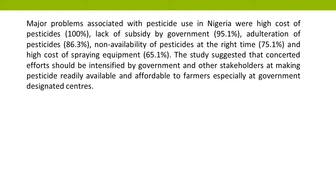Major problems associated with pesticide use in Nigeria were: high cost of pesticides (100%), lack of subsidy by government (95.1%), adulteration of pesticides (86.3%), non-availability of pesticides at the right time (75.1%), and high cost of spraying equipment (65.1%). The study suggested that concerted efforts should be intensified by government and other stakeholders at making pesticides readily available and affordable to farmers, especially at government-designated centers.